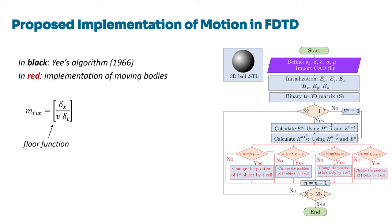In our new direct FDTD approach, the positions of objects change over time according to their velocities. For a given motion speed V, the position of the object remains fixed for mFix multiplied by delta_t, where mFix is shown in the slide. After this fixed interval, the object moves to a new grid position by one cell. This method allows us to simulate the movement of objects in a way that preserves the accuracy of Maxwell's equations without requiring relativistic corrections. One key advantage is that it can be applied to complex scenarios involving multiple objects moving at different velocities, and it can accommodate non-uniform motion where the velocity of an object changes over time.